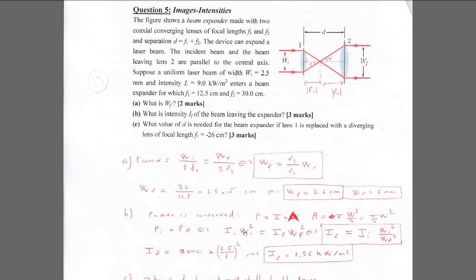Running the calculation, you find I_final equals I_initial times (wi/wf) squared, giving 1.56 kW per square meter. This makes sense — it has become smaller than the initial intensity because you have increased the area.